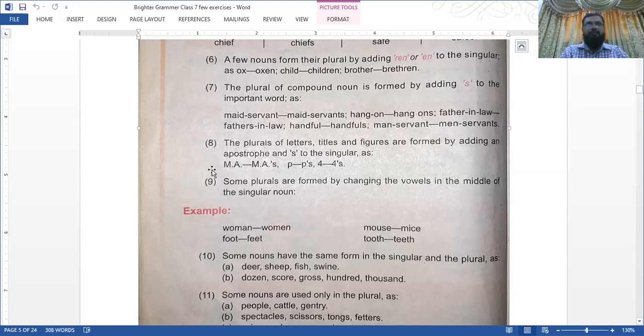Number eight: the plurals of letters, titles, and figures are formed by adding an apostrophe and S to the singular. M.A./M.A.'s, P/P's, four/four's. This apostrophe means 'belongs to,' like girl's with an apostrophe means belongs to the girl, boy's belongs to the boy. When the apostrophe is in the end like boys' then apostrophe, it will be for the plural - for many boys, for many girls.